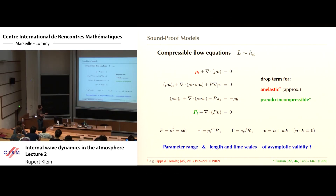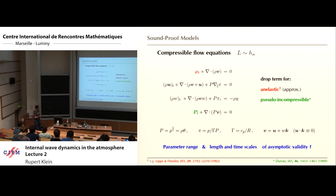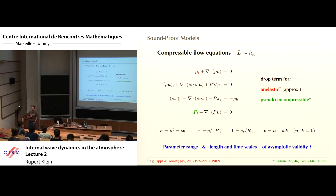Then Dale Duran came later in the late 80s and suggested an alternative. He said it really isn't the density that's almost constant — we need density fluctuations for buoyancy effects, as in convection or gravity waves. What's almost constant in time is the pressure, and since rho theta is essentially a function of the pressure — as the equation of state of an ideal gas tells us — we can drop the dp/dt here and we get a different divergence constraint. These models then were side by side in the literature with many people running models, comparing solutions, debating back and forth with no decision on what would be the better one of the two.